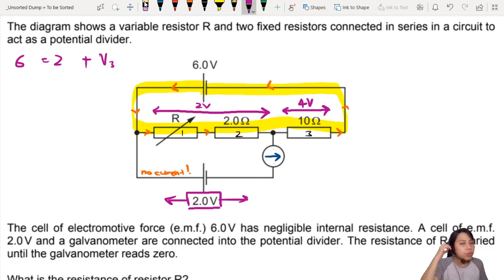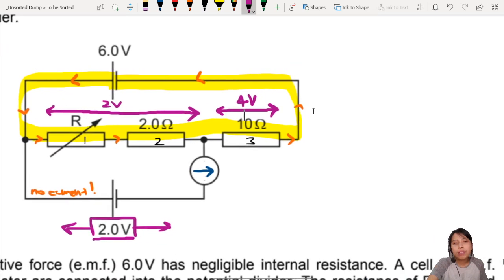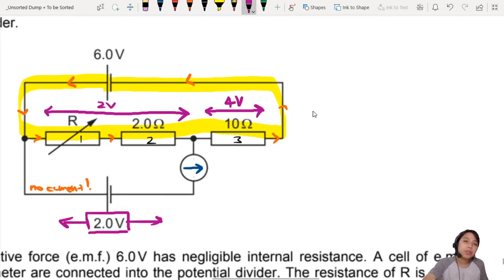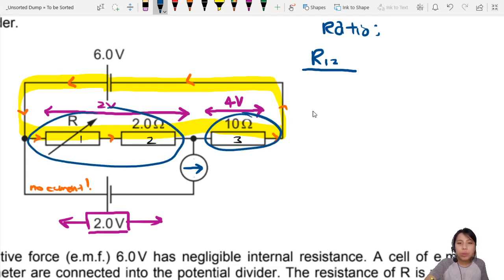So what if I use ratios to find the total combined resistance of one and two? Let's try that out. So I'm going to use ratio. It's our best friend to help us find, it's like solving a puzzle. So what is the resistance of one and two combined? So I'm going to take the ratio of these two against this. So the ratio of the combined over 10 ohm equals to the potential of the combined section, which is 2 over 4.